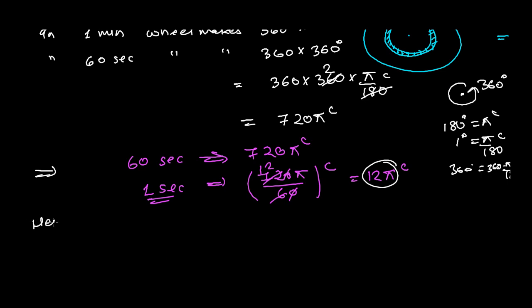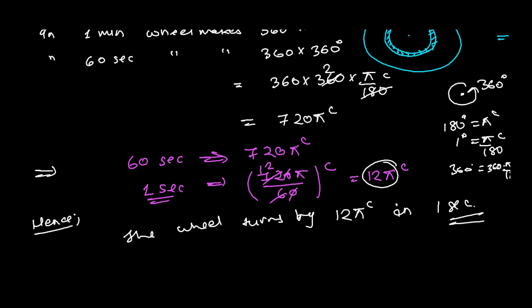Hence, the wheel turns by 12 pi radian in one second. This is our answer. And this is how we need to solve this type of problem. You need to first fundamentally understand the question, picturize this problem. And once you become able to analyze perfectly correctly, you can easily solve this by using the formulas.